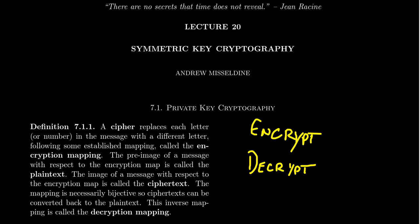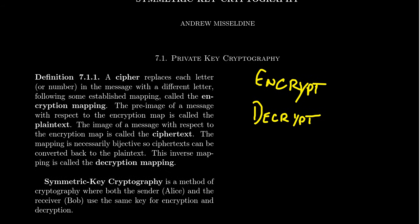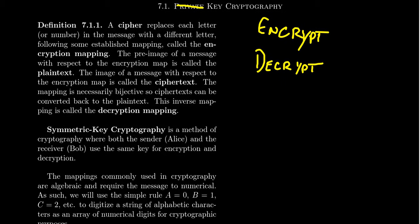These methods I mentioned have some advantages, but they're by no means the most sophisticated type of encryption out there. In Section 7.1 of Tom Judson's textbook, I want to introduce the idea of symmetric key cryptography, which Judson here refers to as private key. Symmetric key is a more accurate label here, and I'll explain exactly what that means in just a second.